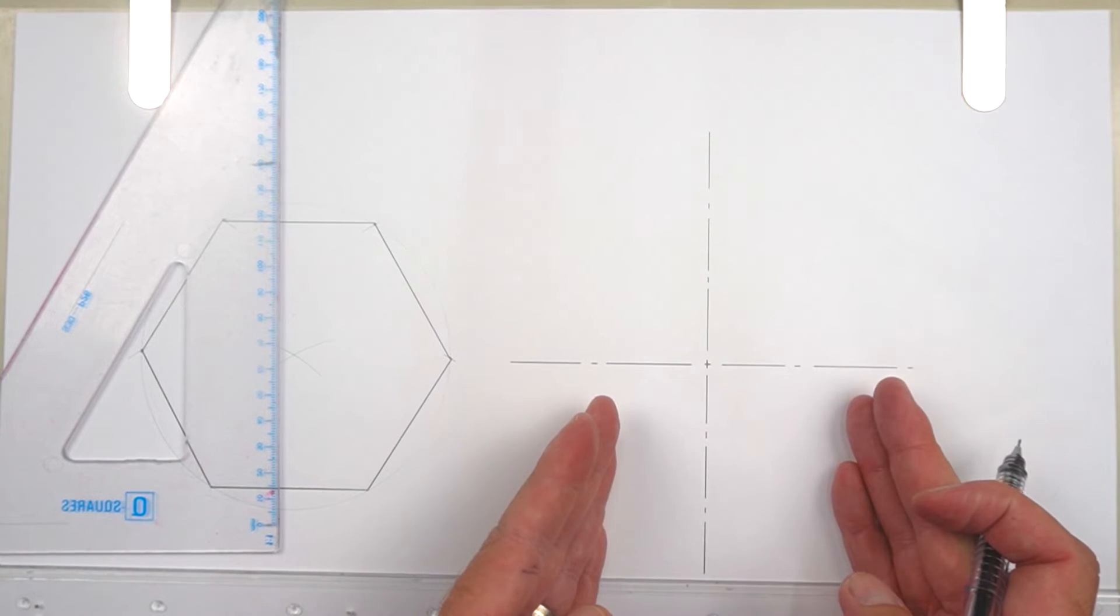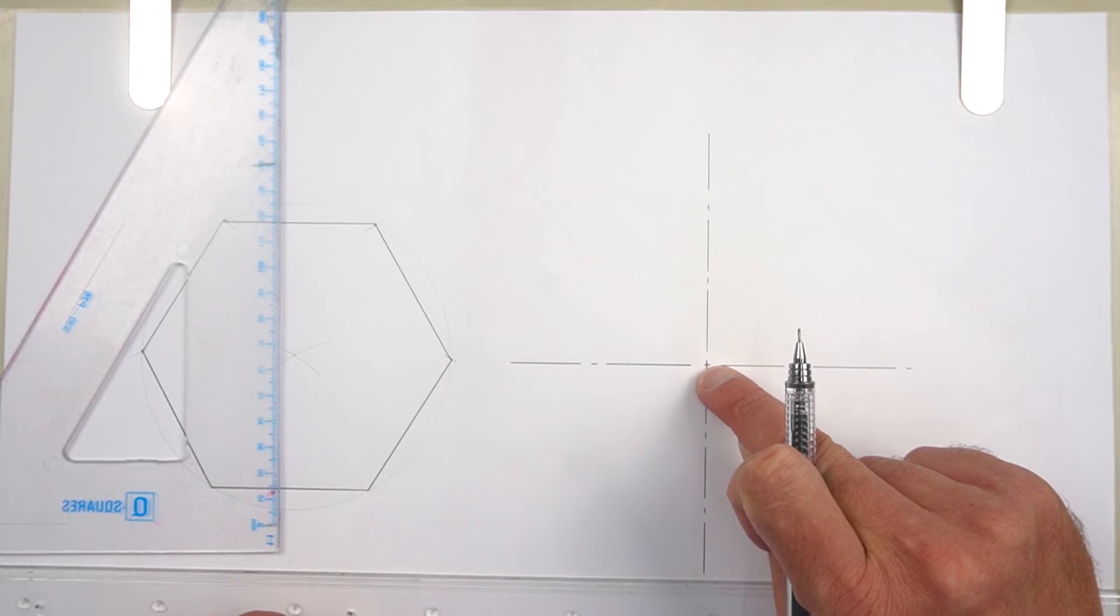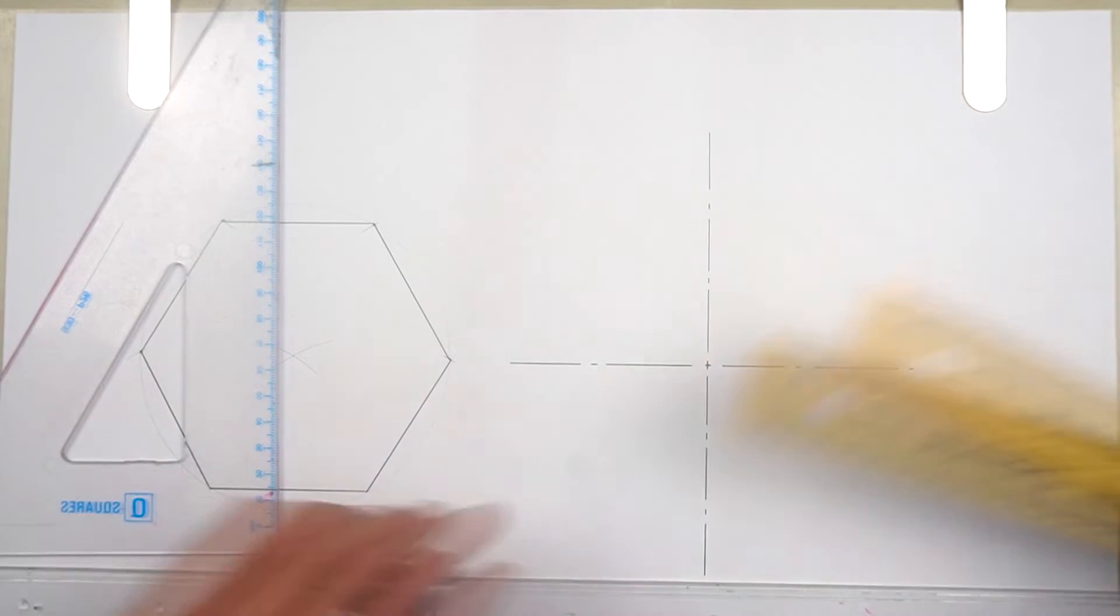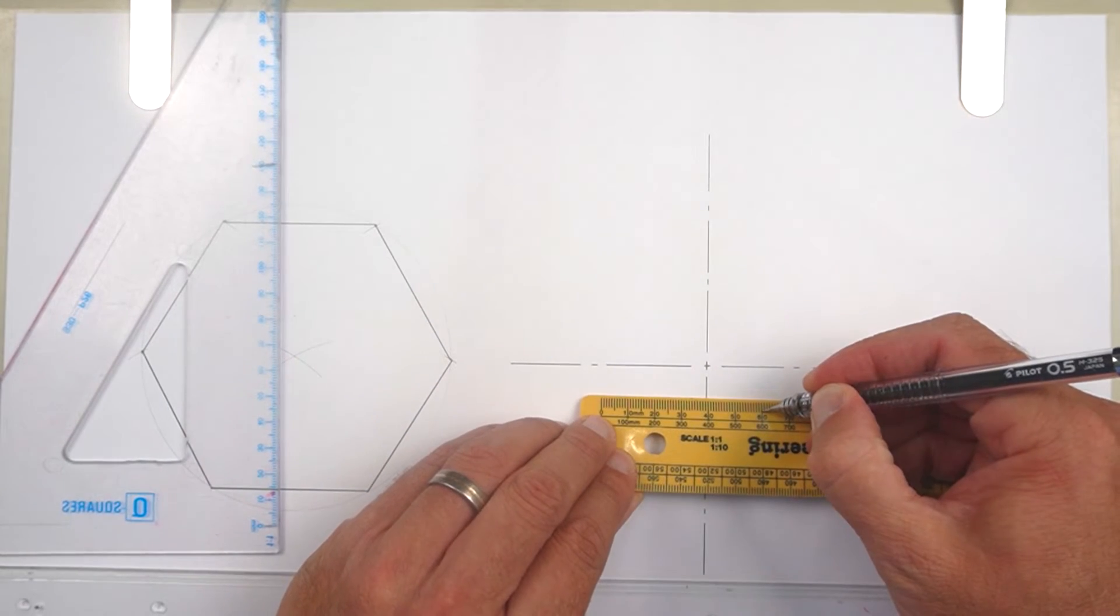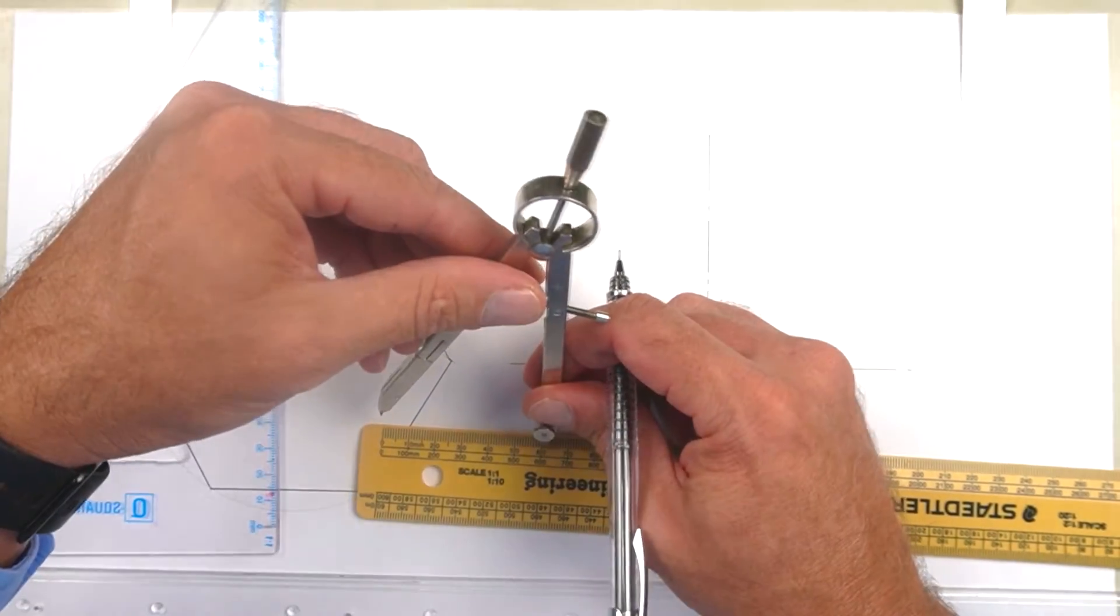In this question, they ask you to draw a hexagon with a center at this point, and they say the base length is 60 millimeters. What we're going to do is take our compass and set it to 60 millimeters.